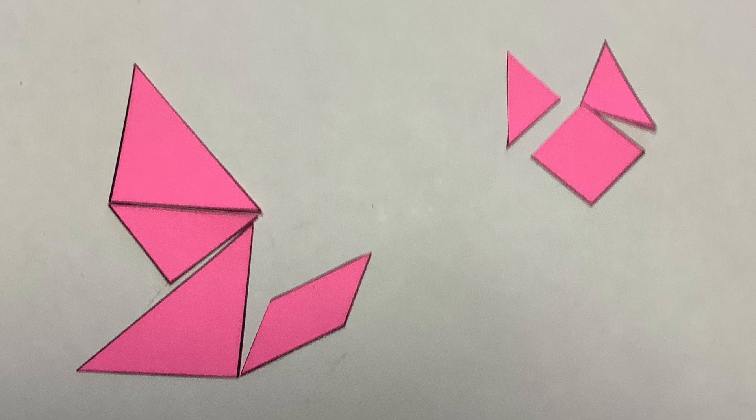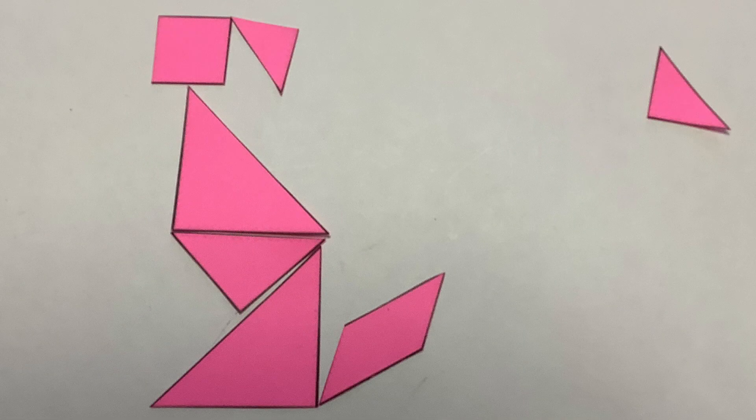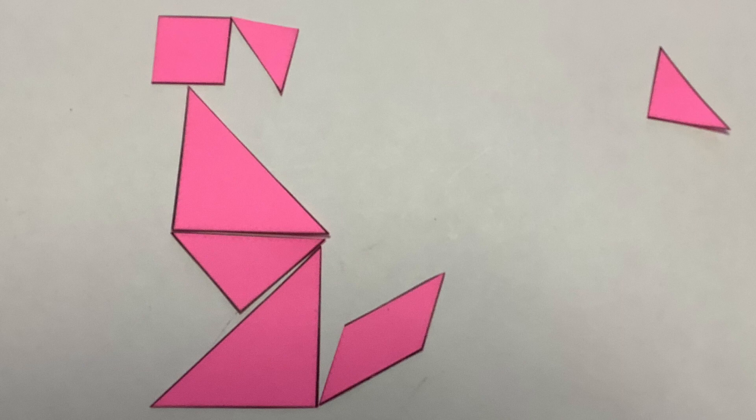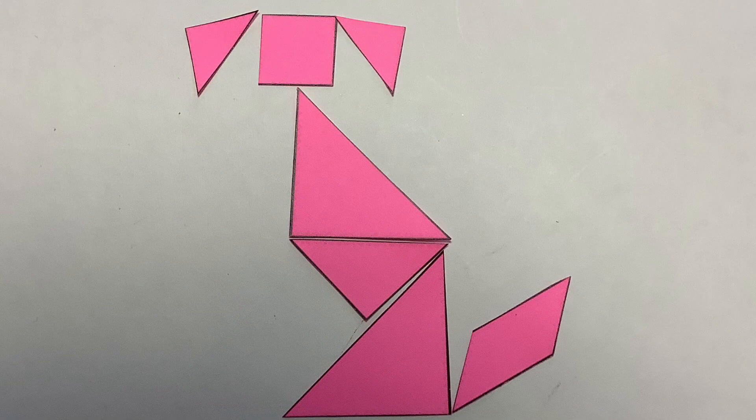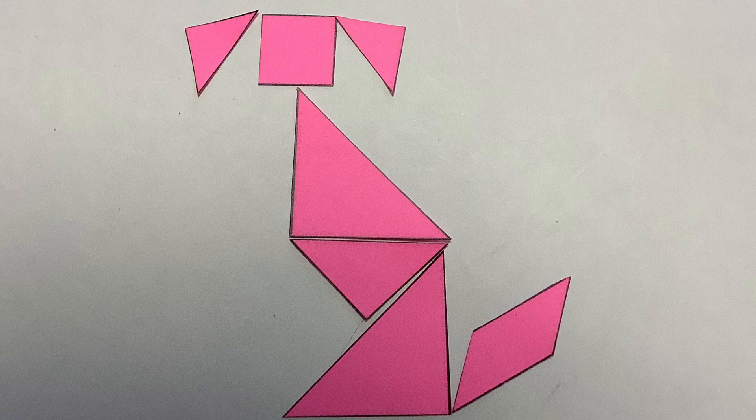The biggest triangle again for the shoulders, the square for the head and the small triangle for an ear, and then the other small triangle for the last ear. Thank you.